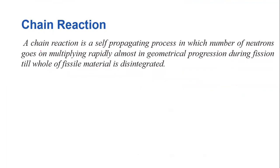In our class, there is a nuclear reaction and spontaneous propagation. The definition of the chain reaction is a self-propagating process in which the number of neutrons goes on multiplying rapidly, almost in geometrical progression during the fission, till the whole fissile material is disintegrated. It's self-propagating.